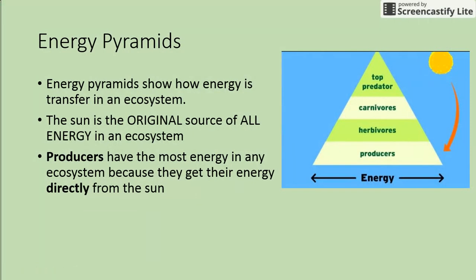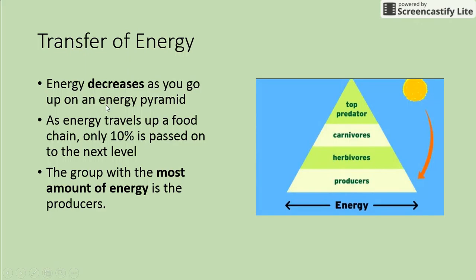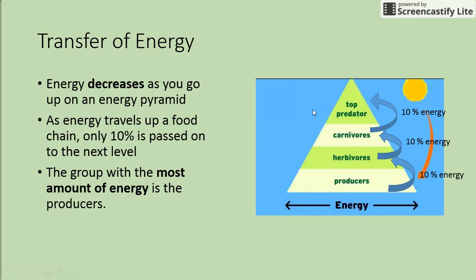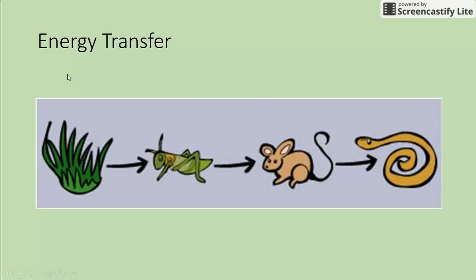We organize the flow of energy using energy pyramids, which show how energy is transferred in an ecosystem. The sun is our original source, and producers have the most energy because they get it directly from the sun. Energy decreases as you go up the pyramid — as energy travels up a food chain, only ten percent is passed on to the next level.